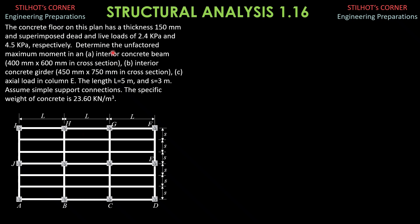This is two-way distribution because the ratio L divided by S, which is 5 divided by 3, is less than 2 — specifically 1.667, which is less than 2. The total uniform pressure on the floor is 2.4 kilopascals superimposed dead load plus 4.5 kilopascals superimposed live load, plus the uniform weight of the slab, which is specific weight times the thickness of the slab 0.15. So the uniform pressure on the floor is equal to 10.44 kilopascals.